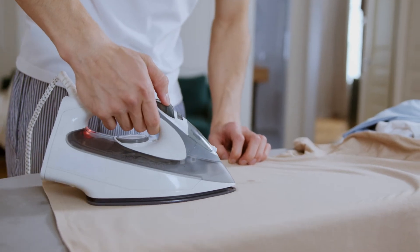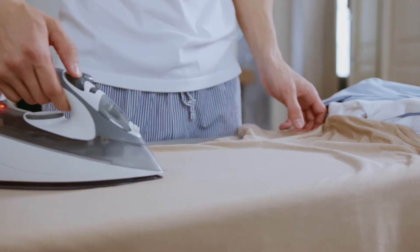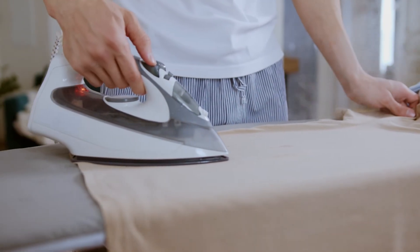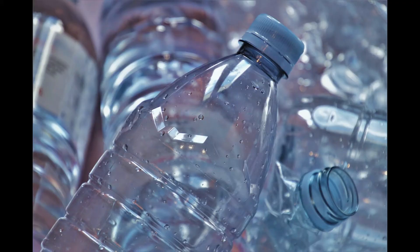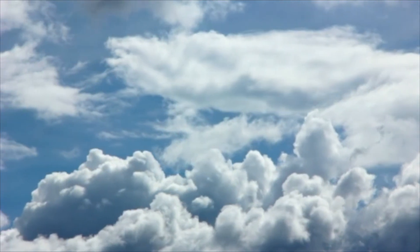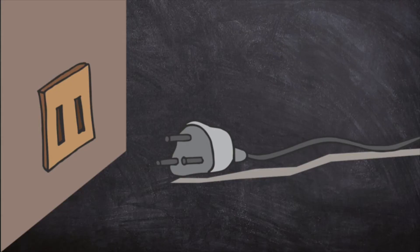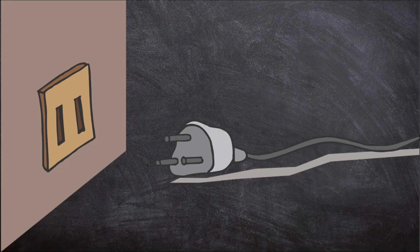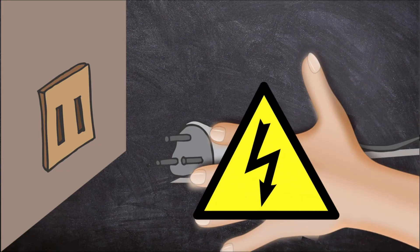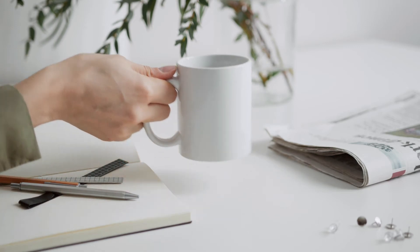Insulators are just as important as conductors. These materials help keep electrical devices safe and allow us to handle hot objects. Plastic, rubber, wood, glass, cotton, and air are all insulators — they block heat and electricity from moving from one place to another. The lamp cord and plug are both coated in plastic to keep the electrical current inside. Without this insulator, you could be electrocuted when you plug in the lamp.